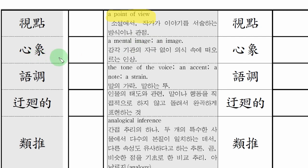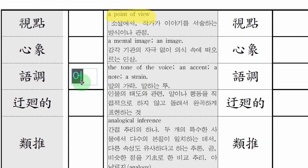그럼 두 단어 읽을 수 있겠죠? 심상. 시점. 그 다음에 어조. 어조의 뜻이 뭘까? 나라는 투. 나라는 투를 어조라 그래. 강한 어조로. 이렇게 할 때 쓰는 어조예요.